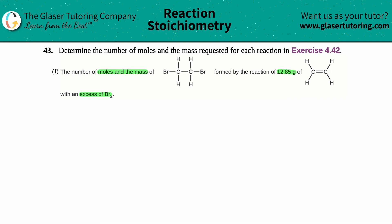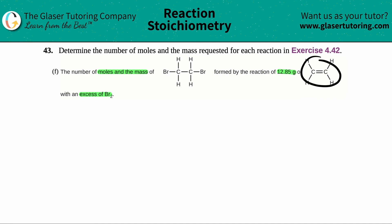We've done tons of practice with balanced equations. If you want more practice, check out the previous questions in this playlist — there's tons of them. For now, pause the video and see if you can come up with an equation and see if it matches mine. The problem says to find the moles and mass of a compound formed by this reaction, so the product comes from the reaction between ethene and Br₂.